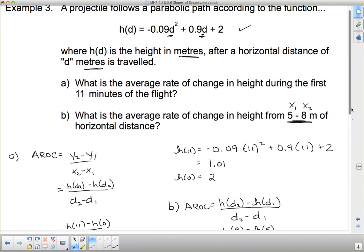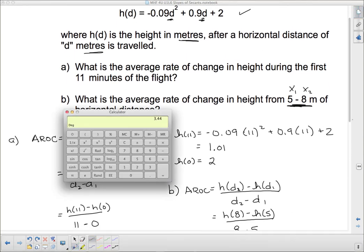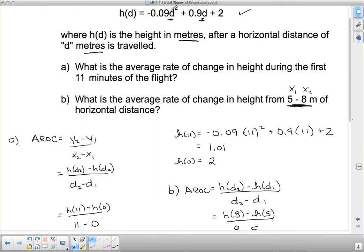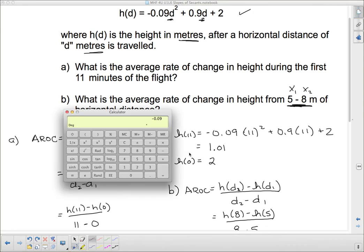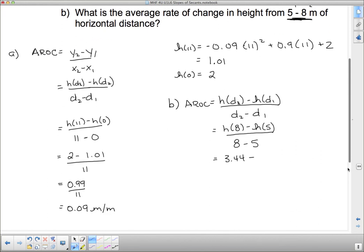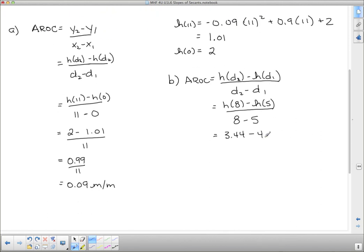h(5), let's pull this up so we can see this function again. h(5) will be -0.09 times d squared, so that's going to be 5 squared, which is 25, plus 0.9 times 5, plus 2, which is 4.25 over 8 minus 5. And if we evaluate these, this is what we get.